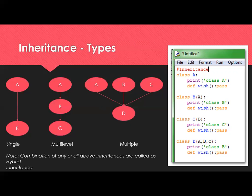The main feature of Python is multiple inheritance. Class D inherits from A, B, and C — all three classes. Hybrid inheritance is the combination of any or all of the inheritance types. So if you have all or some combinations of the above, that is called hybrid inheritance.